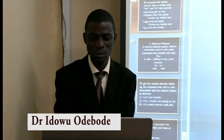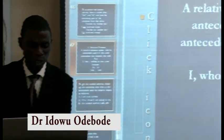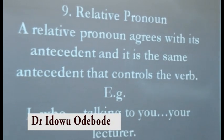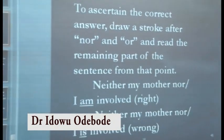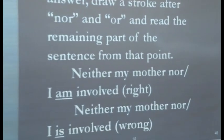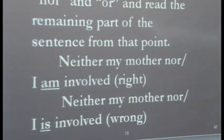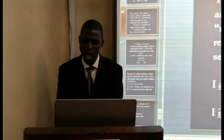The same rule applies to relative pronouns. For the sentence 'Either my friend or you ___ there', draw a stroke after 'or' and read: 'You are there.' So the answer is 'Either my friend or you are there.'